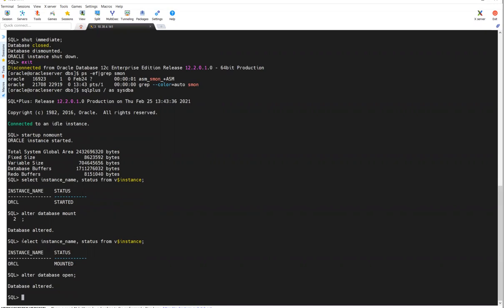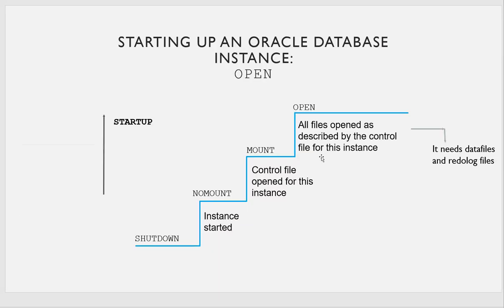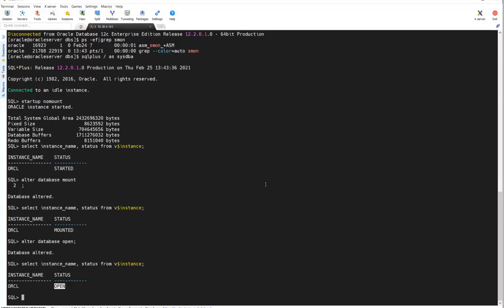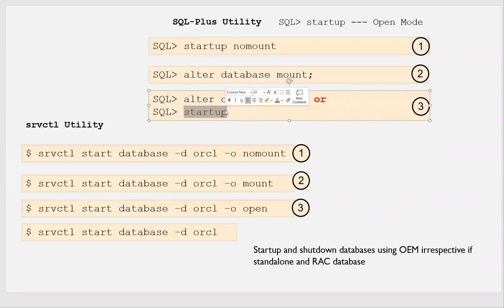The database is now in open mode — it went from mount to open mode, reading all control files. That covers all three startup stages. Alternatively, if you just do 'startup', it will do everything at once — shutdown to no-mount, no-mount to mount, and mount to open — without needing three separate steps.